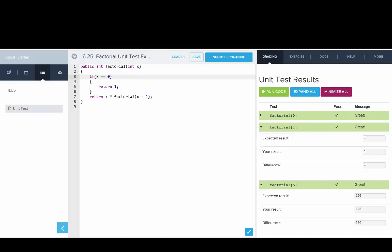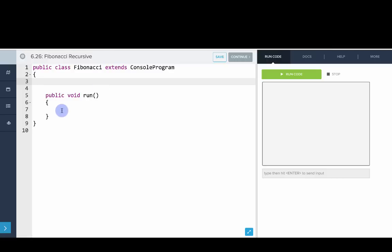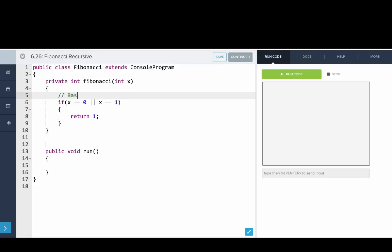Okay, now let's go and write Fibonacci. So we'll start by saying private int Fibonacci of int x. So we say if x equals 0 or x equals 1, return 1. So that is our base case.